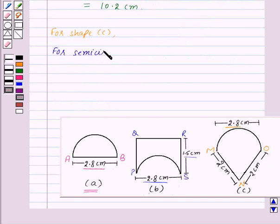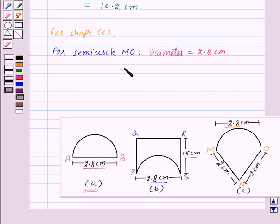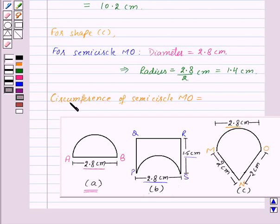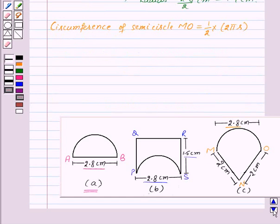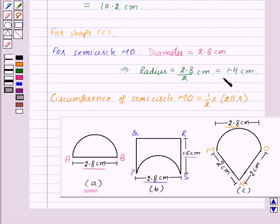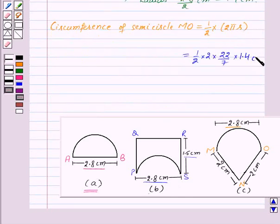For semicircle MO, diameter is equal to 2.8 centimeters. This implies radius will be equal to 2.8 upon 2 centimeters, that is equal to 1.4 centimeters. Therefore, circumference of semicircle MO is equal to 1/2 into 2πr, that is equal to 1/2 into 2 into π, which is 22/7, into r, where r is 1.4 centimeters. Simplifying this we will get 4.4 centimeters. So circumference of the semicircle MO is 4.4 centimeters.